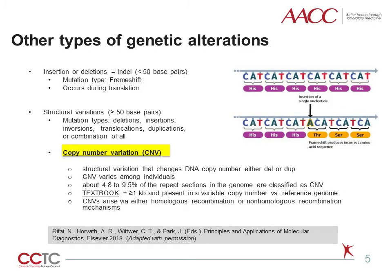Insertions and deletions, also known as indels, usually contain less than 50 base pairs of DNA that has either been inserted into or deleted from the genome. Indels always result in frameshift mutations. The image shows an example of a frameshift mutation that occurred when adenine was inserted between two CAT codons, thus changing the reading frame from CAT to CAT, ACA, TCA, and so on.